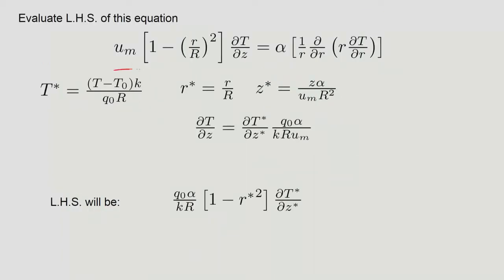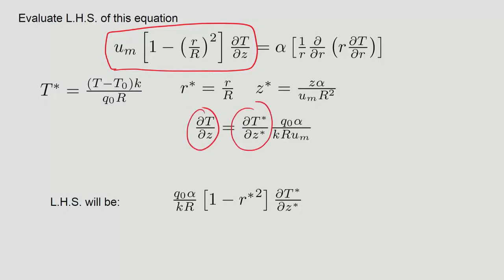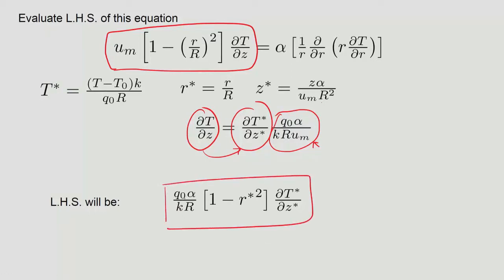Substituting the non-dimensional variables into the left-hand side, ∂T/∂z becomes (Q₀α/KR) times ∂T*/∂z*. The R and R² factors cancel with those from the Z scale, and U_m also cancels. The resulting LHS is fully non-dimensional except for a multiplicative factor Q₀α/(KR), which also appears on the right-hand side.